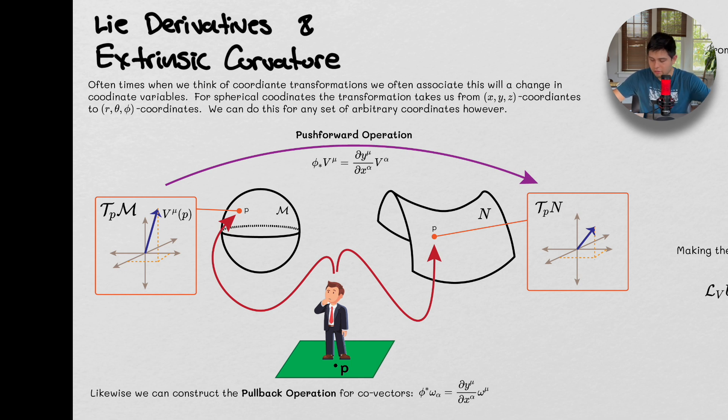So we are talking about the Lie derivatives and extrinsic curvature, and today I want to try to explain this in a way that's relatively easy. We're going to go through some straightforward derivations to enlighten us about a few things before we move on to more complicated things regarding the Palatini action.